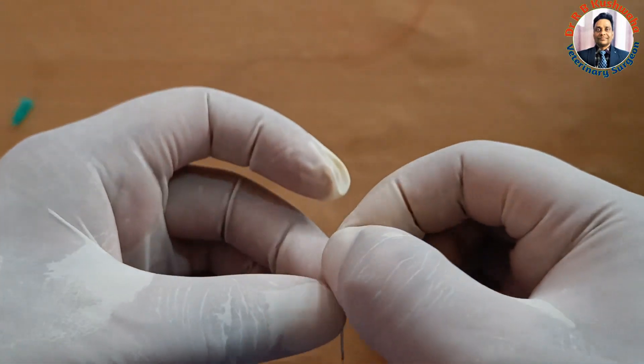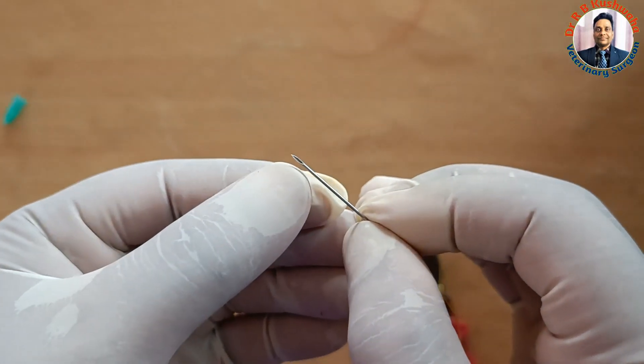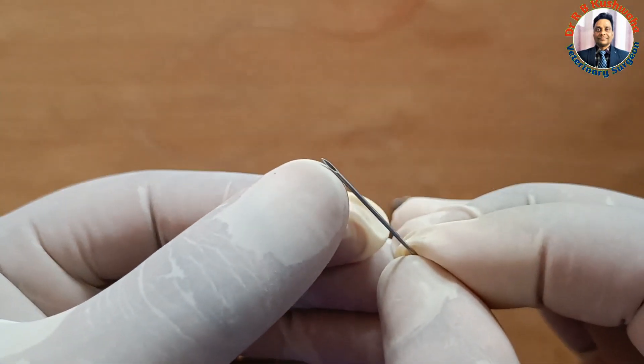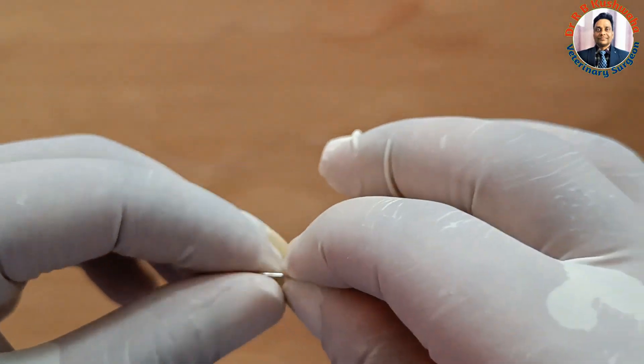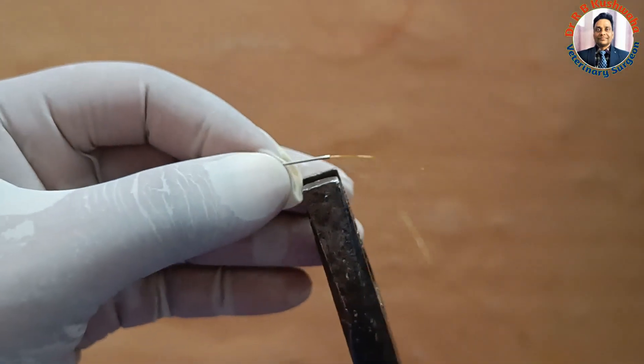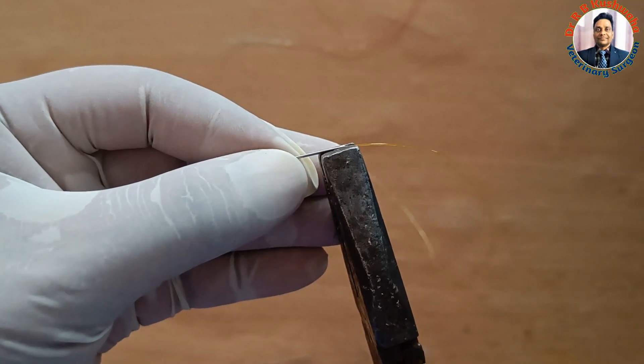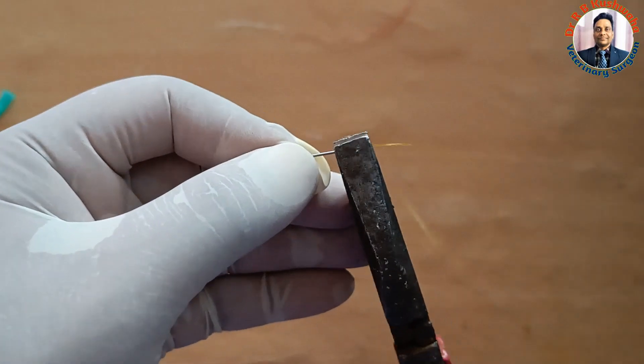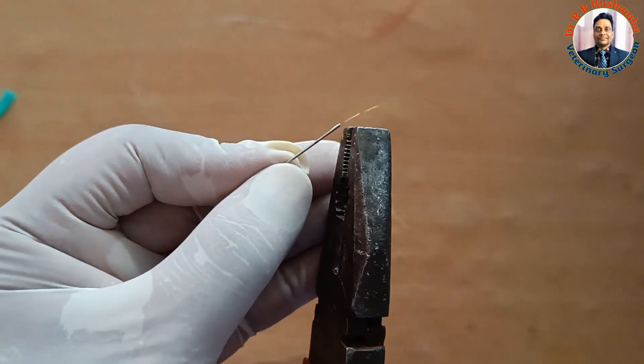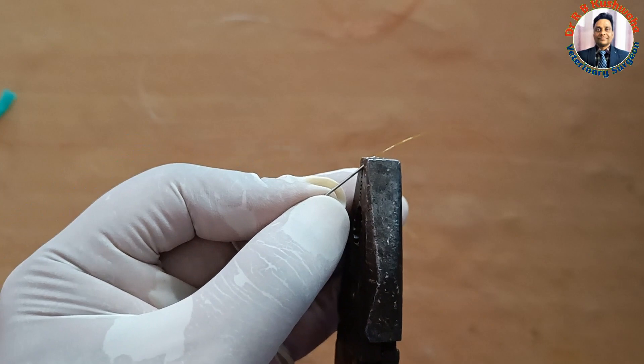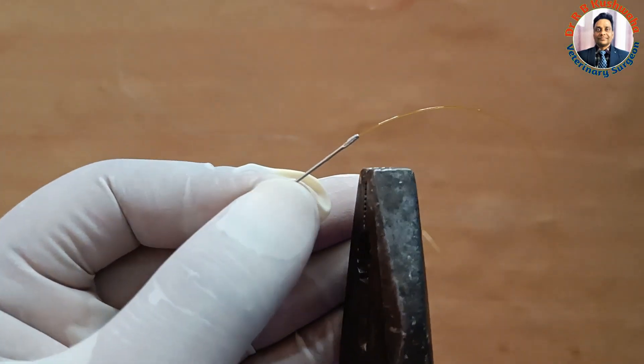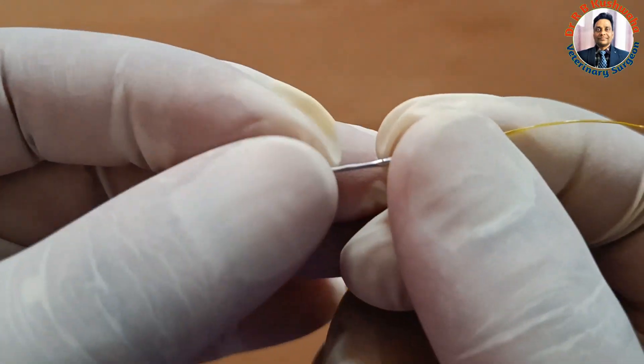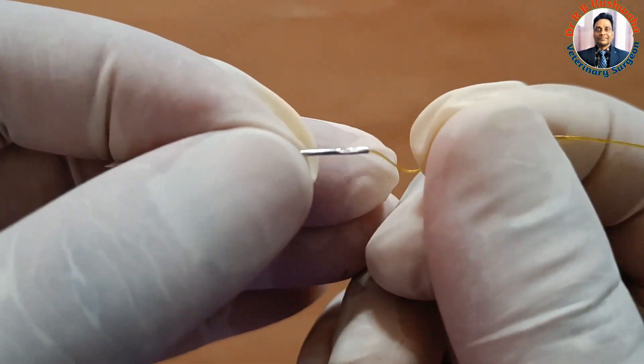The thread should not be visible in the beveling area. Sometime if you don't pull properly it will make a problem. Now we simply take the plier and crush here. If you don't have the plier you can use any crushing instrument. It should be crushed in such a way - like this. Now after crushing you just pull to check. Now it is fixed.